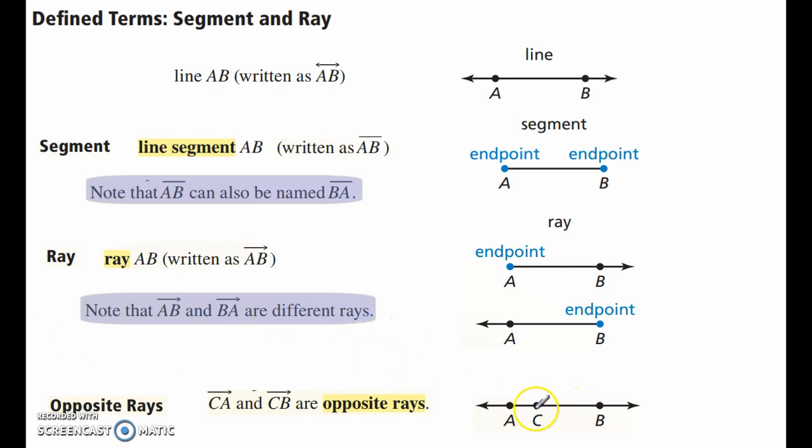Opposite rays, they're on the same line, so the points are collinear, but they go in opposite directions. So CA is an opposite ray to CB.